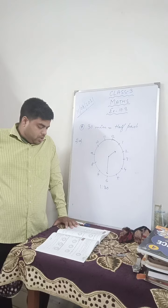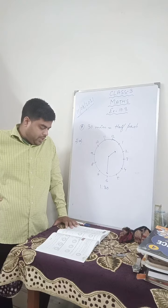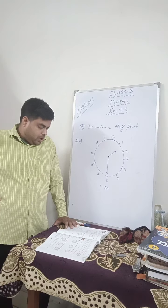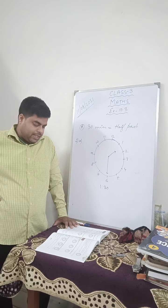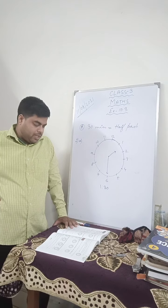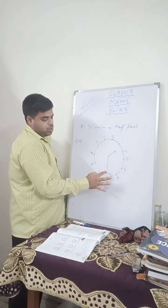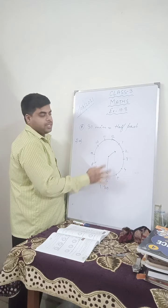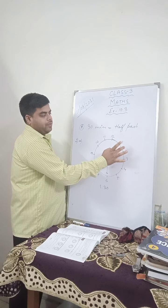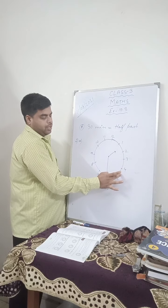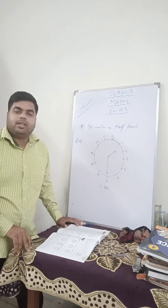Let us discuss one or two fill in the blanks. Fill in the blanks, number 1: when the minute hand moves from 12 to 6, it covers how many minutes? From 12 when it covers all and comes to 6 — each gap, every gap is of 5 minutes. So 5, 10, 15, 20, 25, 30 — it covers 30 minutes.